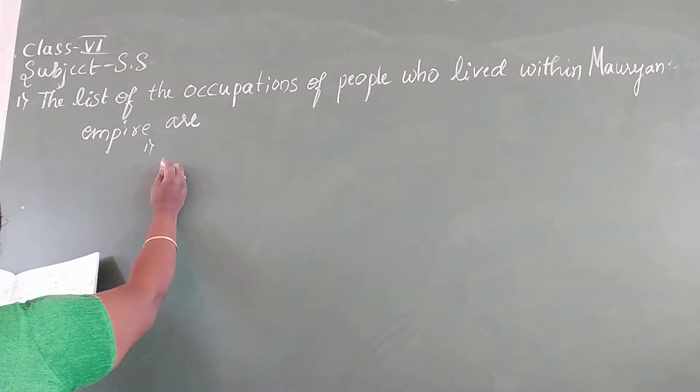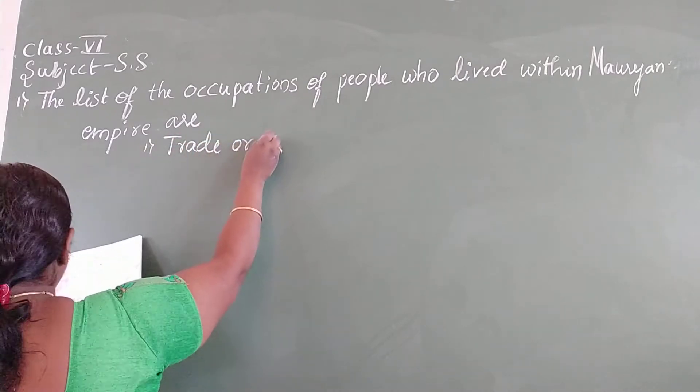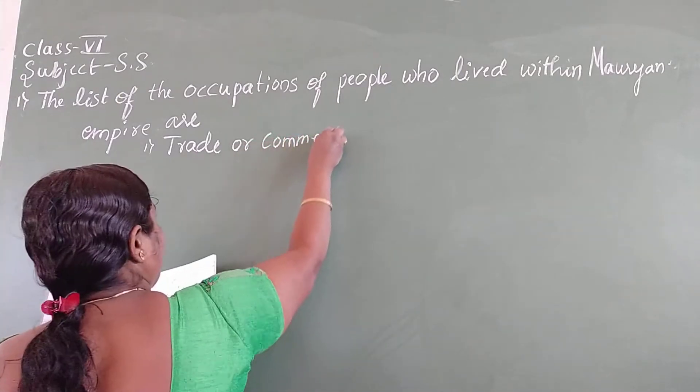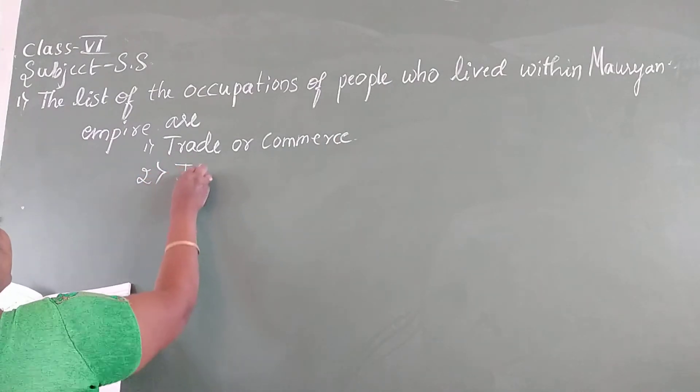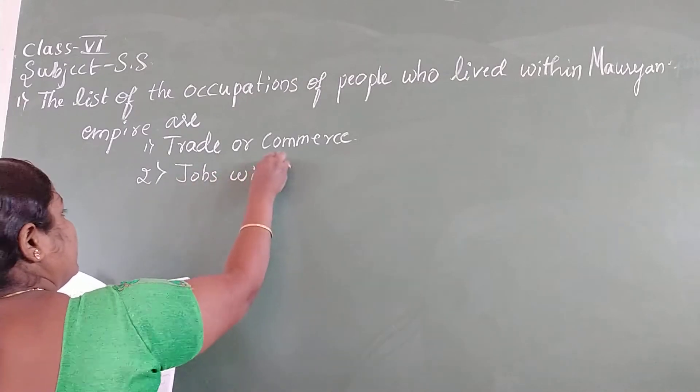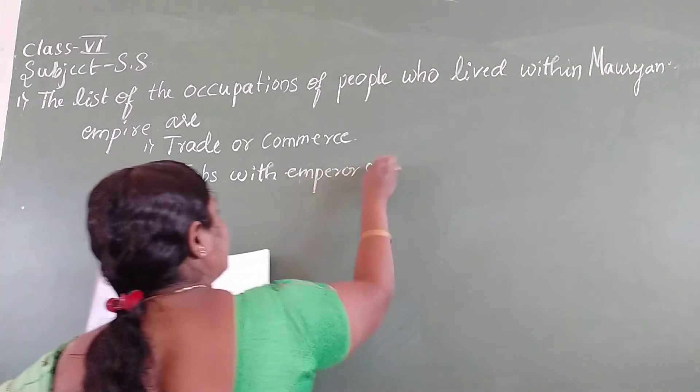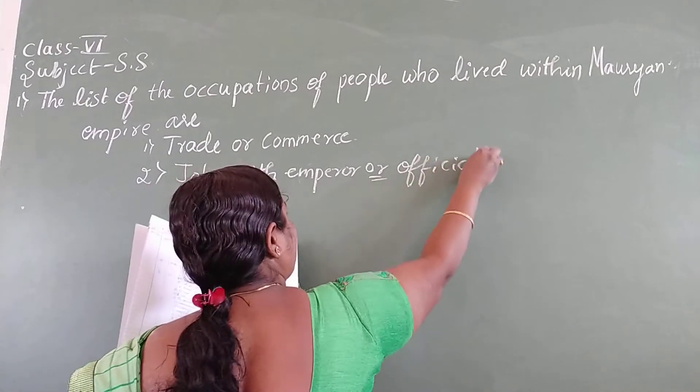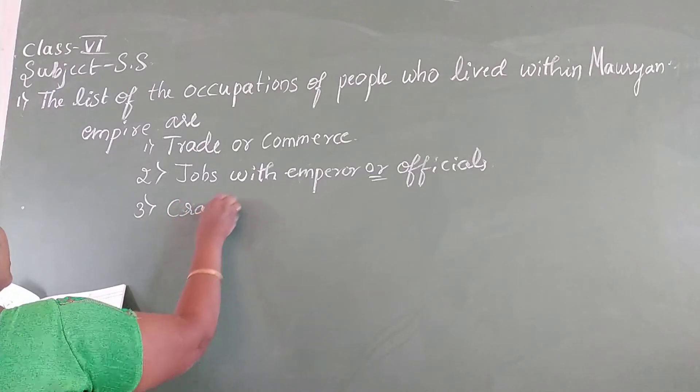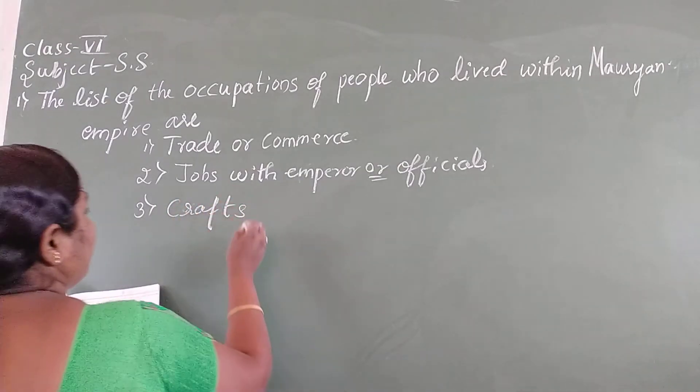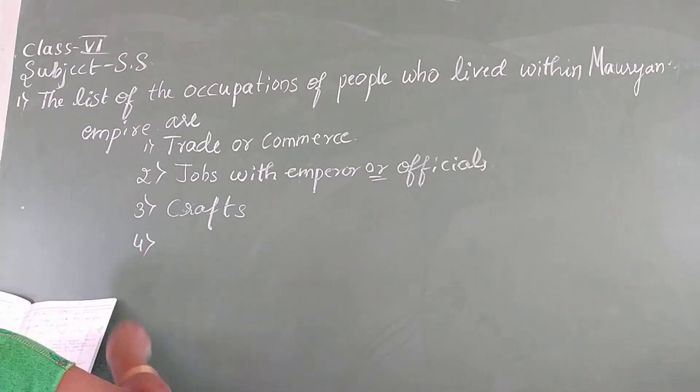First one, trade or commerce. Trade or commerce under Mauryan rule. Second one is jobs with emperor or officials. Third one, craft. It means they help to decorate the palaces, then constructing temples.